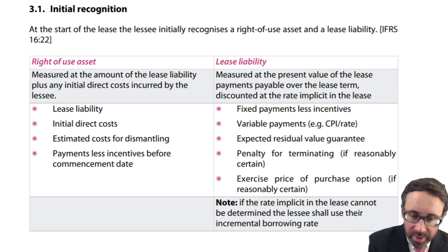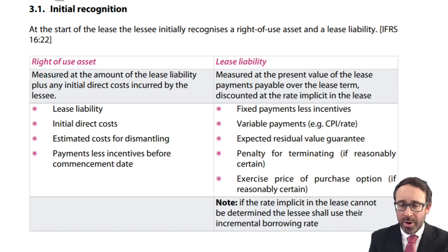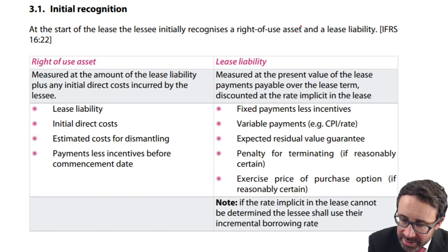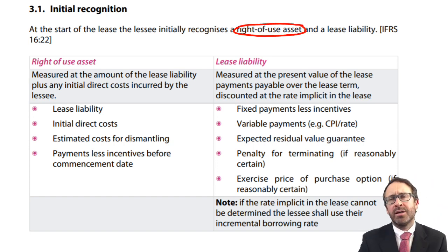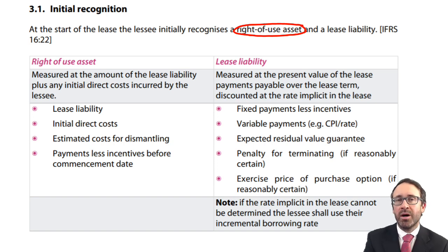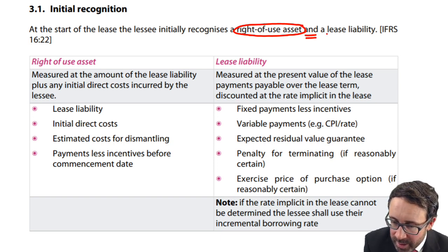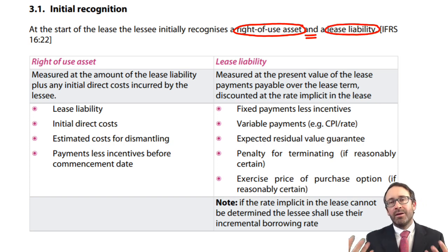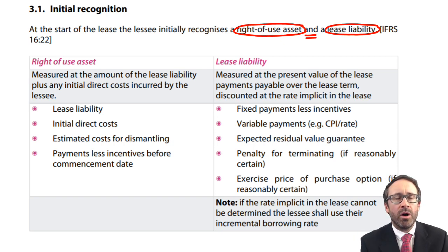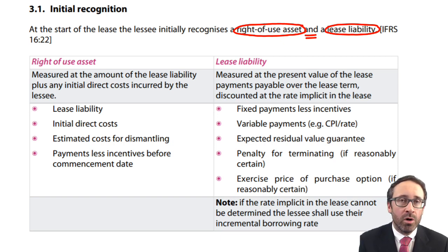Just some minor points to pick up before we get into detailed questions. The asset recognised within your non-current assets is referred to as a right-of-use asset, to distinguish it from other assets you legally own such as property, plant and equipment. You don't own this asset — you just have a right to use it for a fixed period of time. There is also a lease liability, and liabilities are split into current and non-current, so we'll need to calculate the value of that liability and split it accordingly.